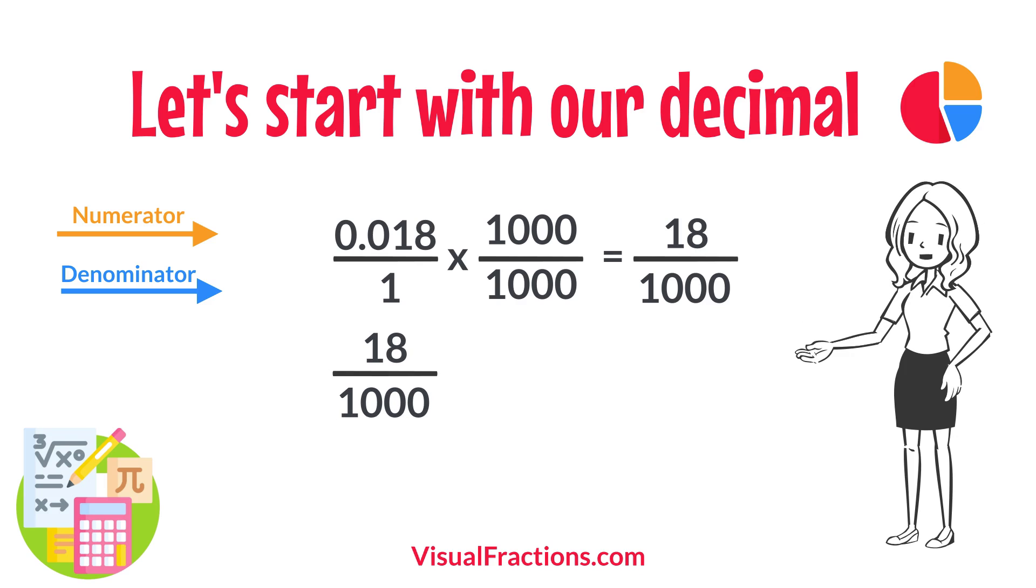Next, we simplify. Both the numerator and the denominator in 18 1,000ths can be divided by 2, the greatest common divisor. Divide 18 by 2 to get 9, and divide 1,000 by 2 to get 500.